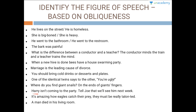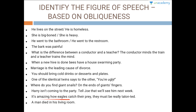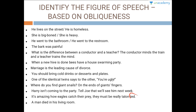Harry isn't coming to the party — tell Joe we will see him next week. This is an unclear statement because we don't know if 'him' refers to Joe or to Harry — so this is an example of ambiguity. It's amazing how eagles catch their prey; they must be really talented — this is an example of pun because the word 'talent' and 'talon' is used pointedly.